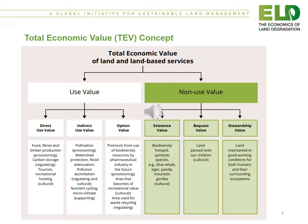This figure is a diagrammatic representation of how the total economic value is split into a use value and a non-use value. Under the use values we have the direct use, the indirect use and the optional use, and under the non-use value we have the existence, bequest and stewardship value.